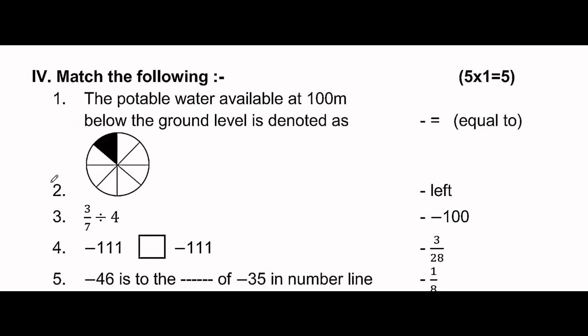Next is match the following. Potable water available 100 meters below ground level is denoted as a negative number - that one is to the left of 0, so that is true. In the fraction representation shown: total how many parts? 1, 2, 3, 4, 5, 6, 7, 8 - 8 parts. How many parts are shaded? 1 part. So the fraction is 1 by 8.